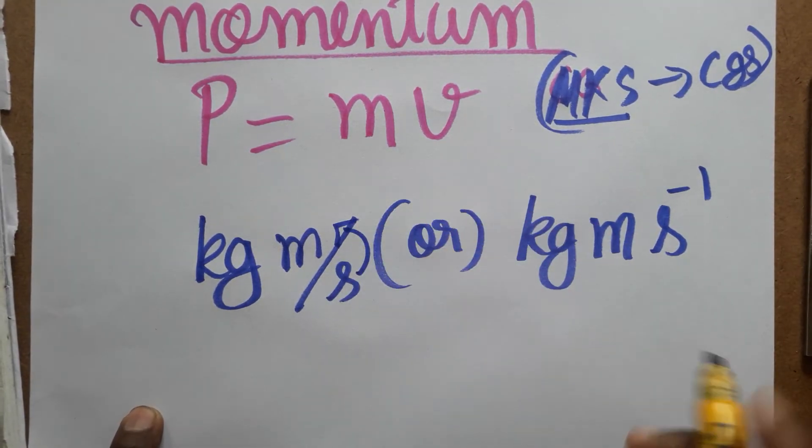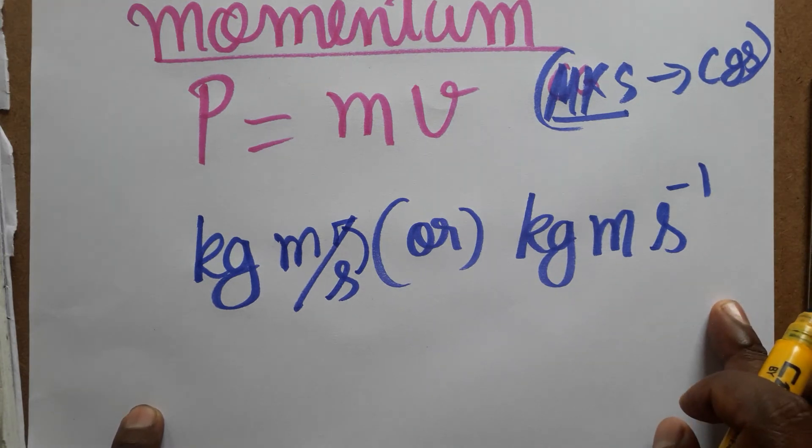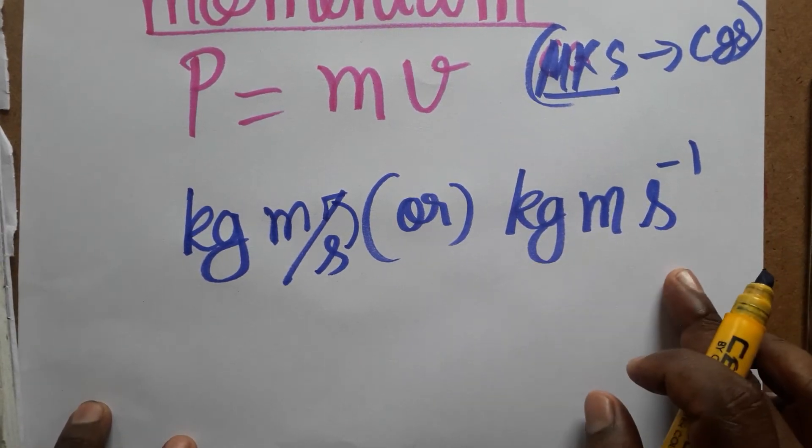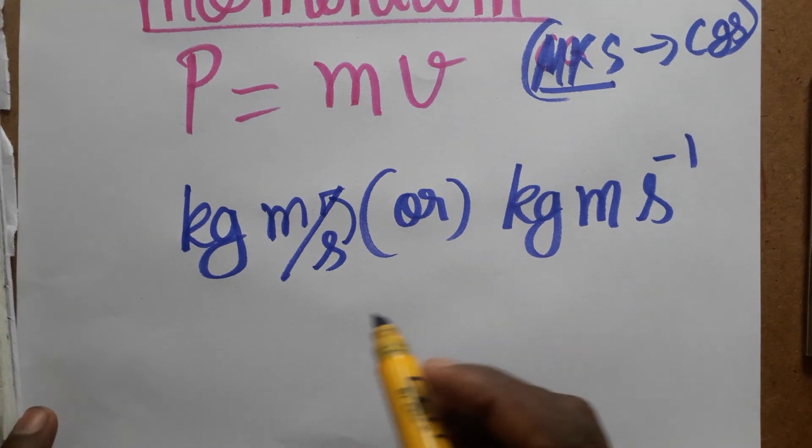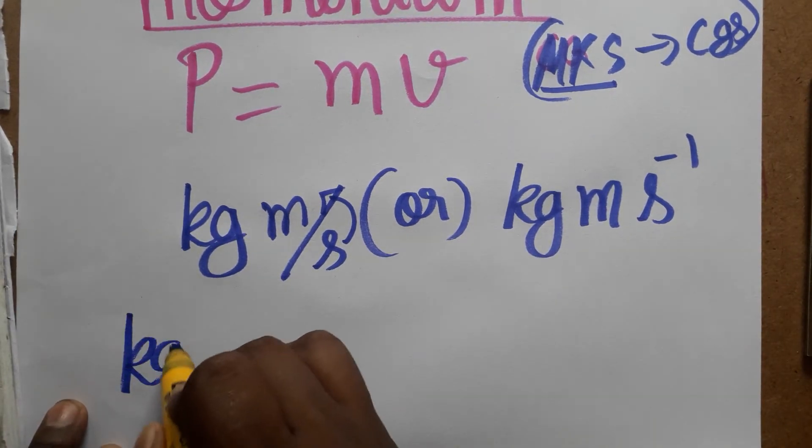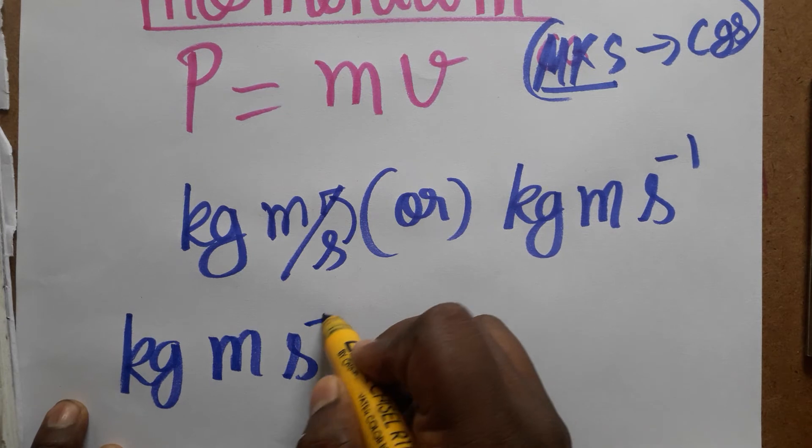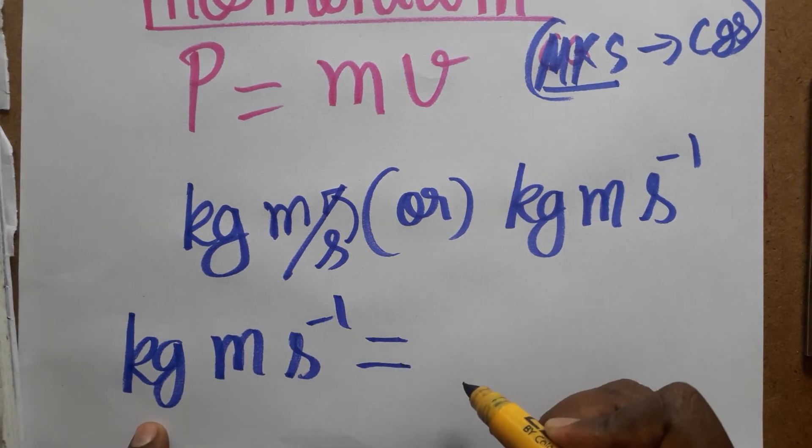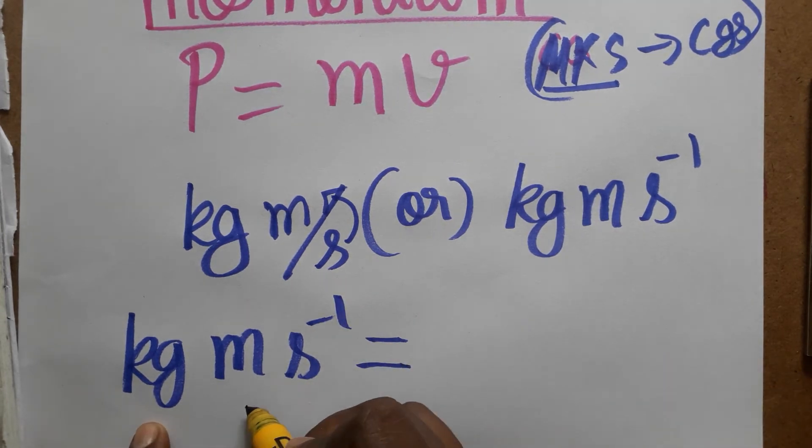Because second from denominator I am taking as a numerator, we will get kilogram meter second minus one. It is in MKS system. The same unit we are going to convert to CGS system, so kilogram meter second minus one we are going to convert to CGS system, that means gram centimeter second.